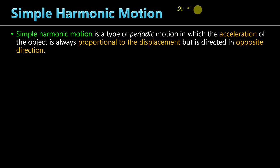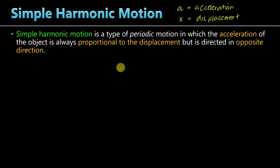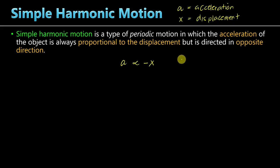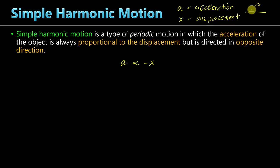If A is the acceleration and X represents the displacement, then we can form a relationship: the acceleration A is always proportional to the displacement X, but its direction is opposite. If the displacement of the object is towards the right, then it must be accelerating towards the left. For example, if the object is moving vertically and it is below the equilibrium position, then it must be accelerating upward. If the object is above the equilibrium position, then it must be accelerating downwards. That is the meaning of simple harmonic motion.